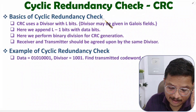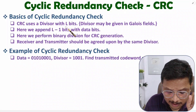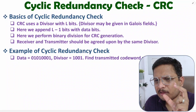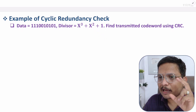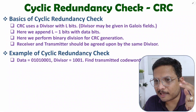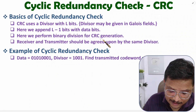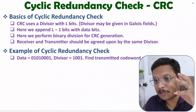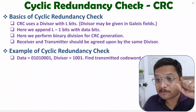In CRC we use a divisor, and the length of the divisor is L bits. The divisor may be given in terms of Galois field as a polynomial. I'll show how to convert that into bits, because all calculations I'll explain are in binary. We perform binary division for CRC generation. Both the transmitter and receiver must agree on the same divisor — only then can the receiver detect errors. First, let's understand how the transmitter generates the codeword.